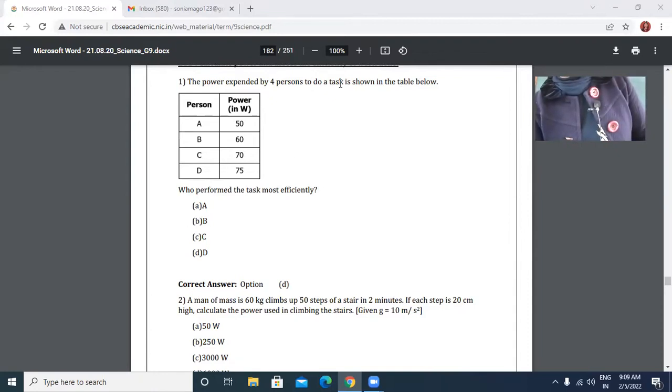So let me do it here. Mass of man is 60 kg. G is 10 meter per second square. And what is the height through which he climbs? 50 steps and each step is 20 centimeter long.